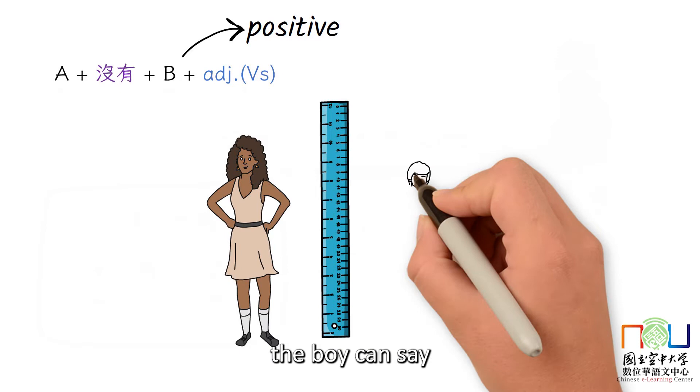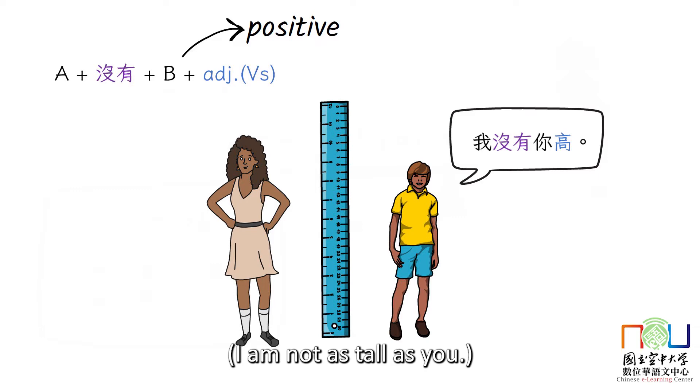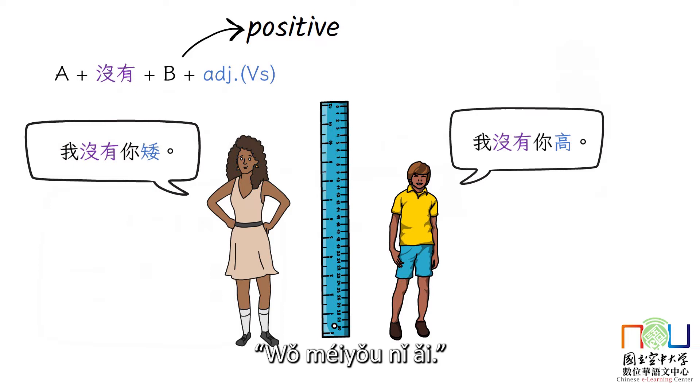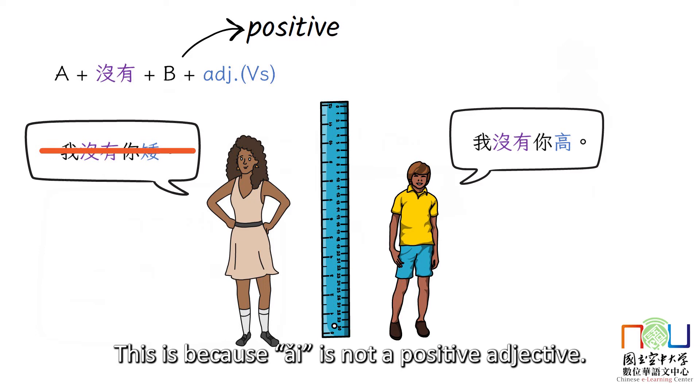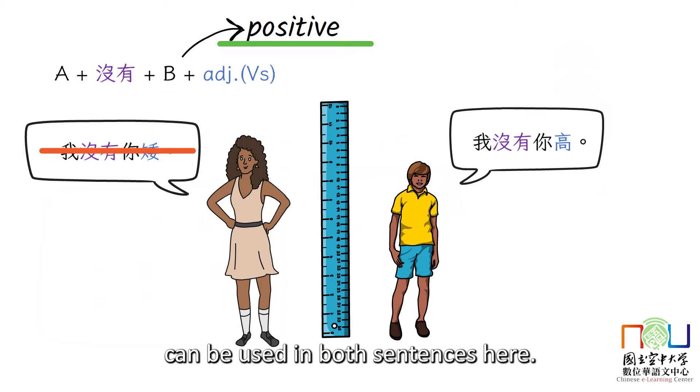In this picture, the girl is taller than the boy. The boy can say 我没有你高, I am not as tall as you. While the girl can't say 我没有你矮, I am not as short as you. This is because 矮 is not a positive adjective. Note that 不比 can be used in both sentences here.